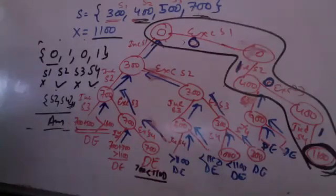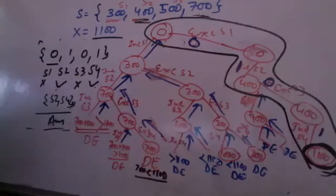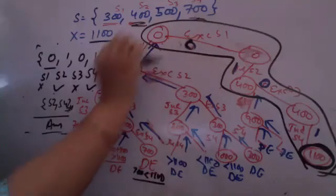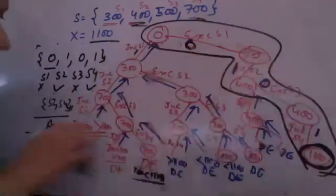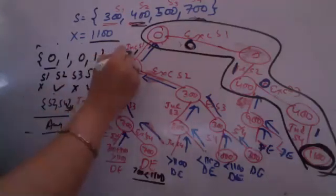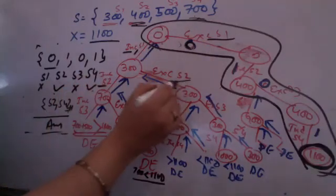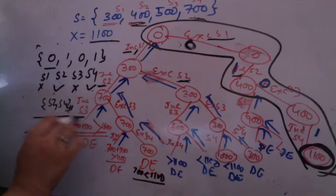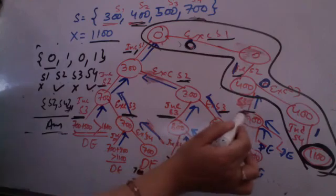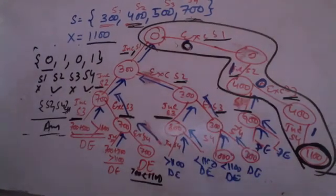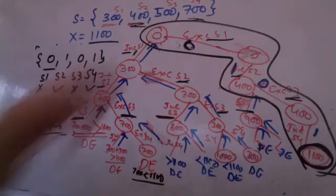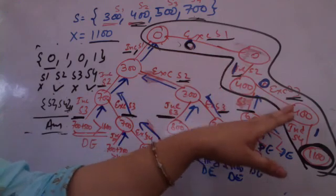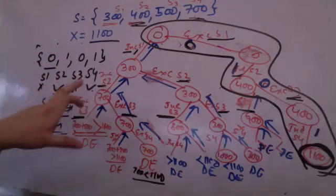The solution vector is 0, 1, 0, 1 — include means 1, exclude means 0. At level 1: S1 excluded (0); level 2: S2 included (1); level 3: S3 excluded (0); level 4: S4 included (1). So the included elements are S2 and S4, which become your answer.